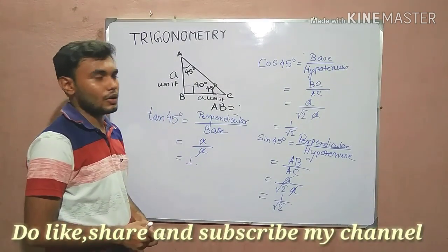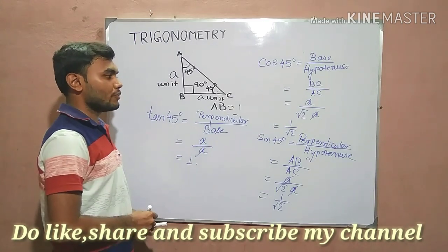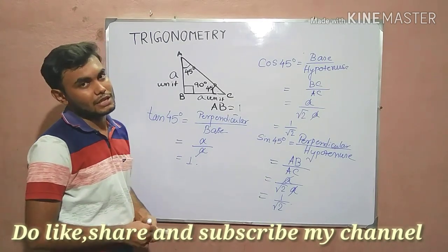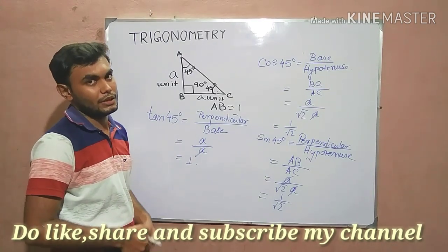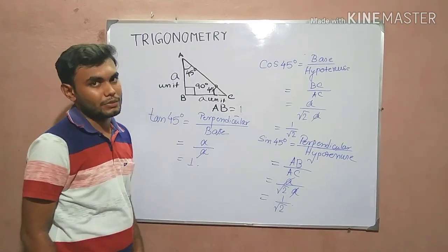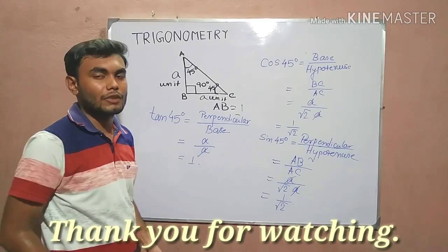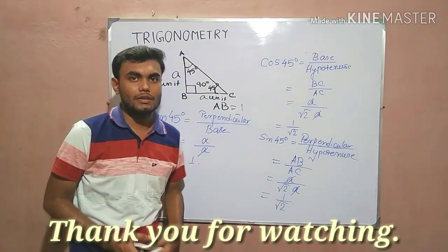So these are the values of cos 45 degree, sin 45 degree, and tan 45 degree. Thank you for watching, friends.